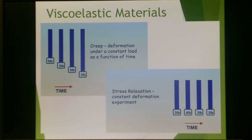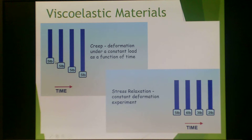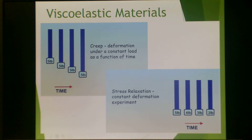To put this in pictures: creep is deformation under a constant load as a function of time. For example, a polymer sample under 5 pounds shows increasing strain over time. Stress relaxation is a constant deformation experiment — to keep the strain constant, we have to reduce the stress over time.